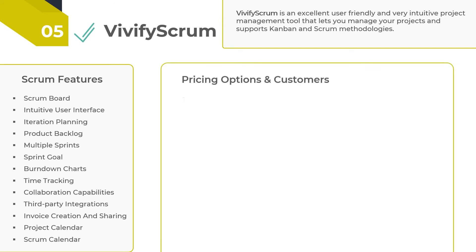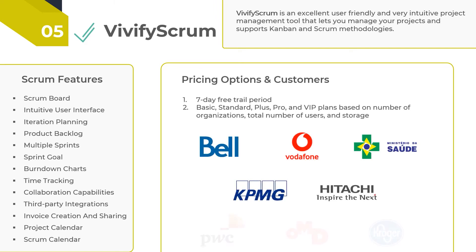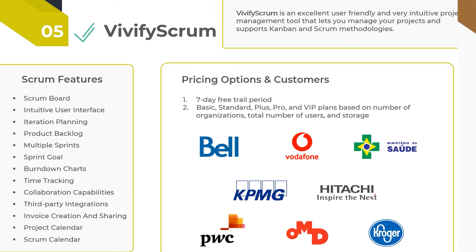Vivify Scrum provides a 7-day free plan that allows for an unlimited number of boards, users, and items, while some advanced features are reserved for the premium plan. Some of the organizations that use Vivify Scrum to better manage their projects are Vodafone, Volvo, Adidas, Hitachi, Bell, KPMG, Arkei, and others.